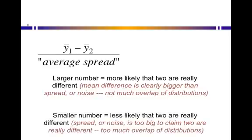Smaller numbers in this case, meaning close to zero numbers, would be ones where it's less likely that these two are actually different from each other. The two means are really close to each other, or the spread of each is so large that it drowns out any difference between the two means.